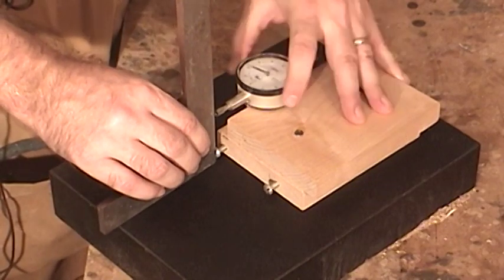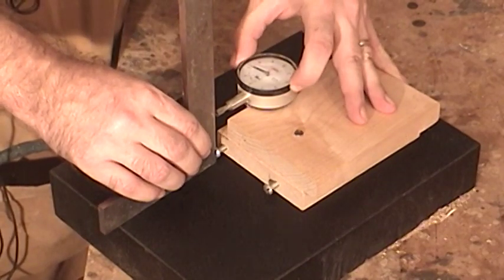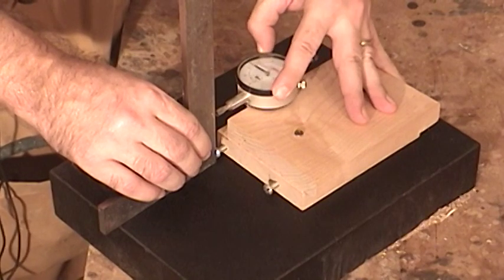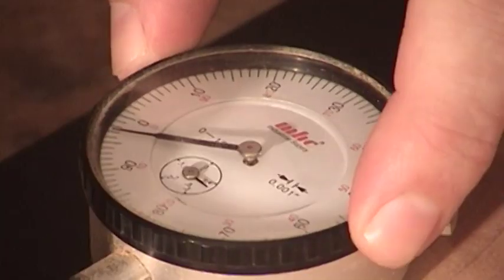This same jig can also be used to accurately and quickly align your table saw blade to 90 degrees. All that is required is to zero the dial indicator against a 90 degree reference.